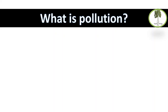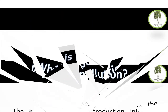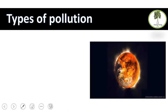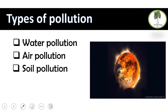Now it's time to ask: what is pollution? It's the presence in, or introduction into, the environment of a substance which has harmful or poisonous effects. Now we know what pollution is, so what are the types of pollution? Water pollution, air pollution, soil pollution — but is this all?